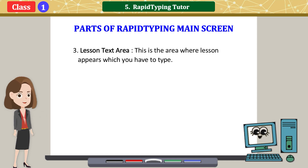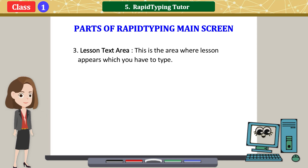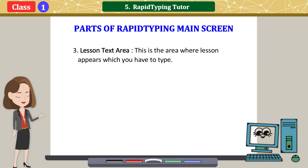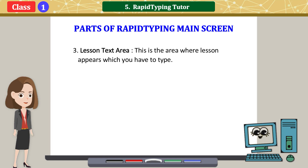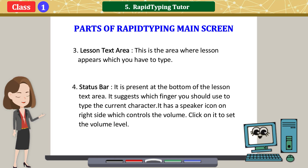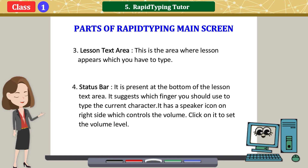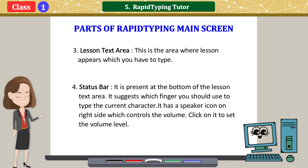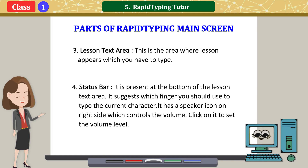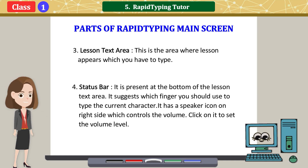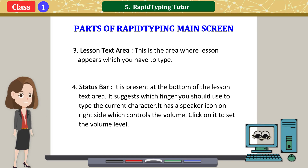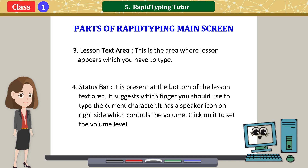3. Lesson Text Area: This is the area where the lesson appears which you have to type. 4. Status Bar: It is present at the bottom of the lesson text area. It suggests which finger you should use to type the current character. It has a speaker icon on the right side which controls the volume. Click on it to set the volume level.